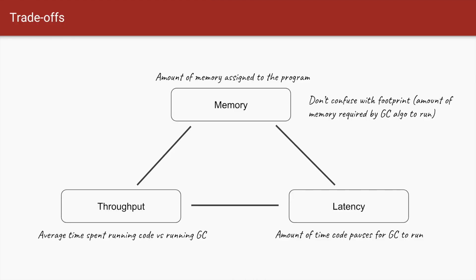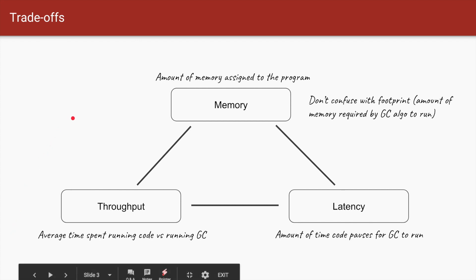When we talk about garbage collection we generally have to consider three things. The first thing is memory — the amount of memory that is assigned to the program. This is also called the heap.